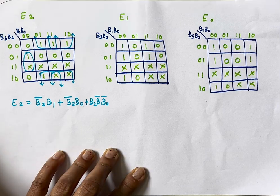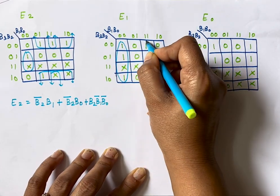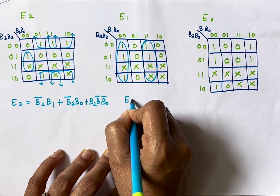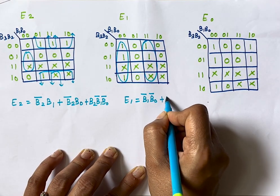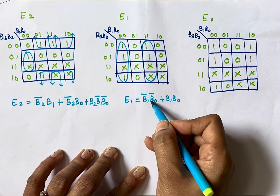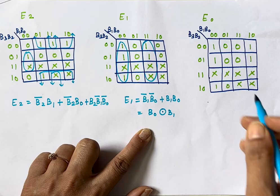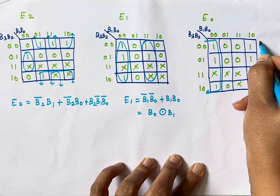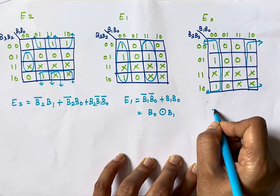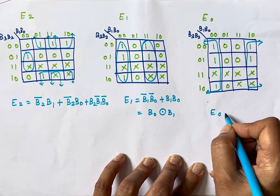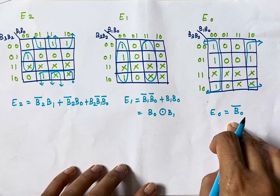For E1, we form two groups. One group gives B1̄·B0̄ and another gives B1·B0, so E1 = B1̄·B0̄ + B1·B0, which is equivalent to B0 XNOR B1. For E0, we can make a group of eight overlapping ones, giving the equation E0 = B0̄. So E0 is simply the complement of B0.